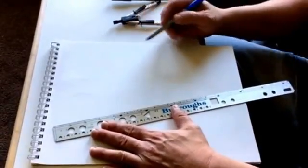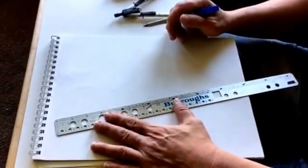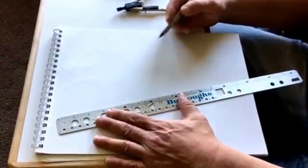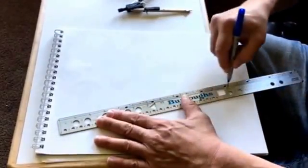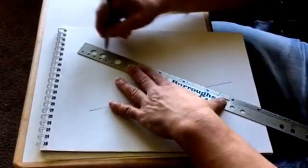How to trisect any angle with a compass and straight edge. I'm not using any of the markings on there, but any line. This is trisection at any angle.